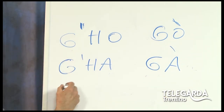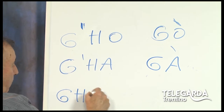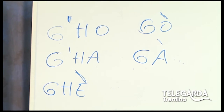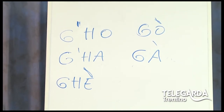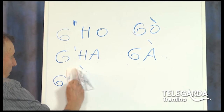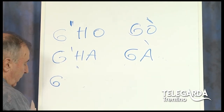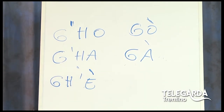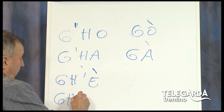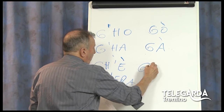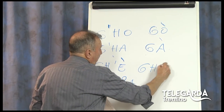Allora scriviamo GO così o GO così, o GA così. Poi c'è anche il verbo essere: GHE. Con accento fonico aperto, non GHE, perché c'è anche il GHE — GELODIT, accento chiuso. GHE voce del verbo essere, accento aperto. In questo caso rimane la GH apostrofo E, GHE. Oppure anche GHE, oppure senza l'apostrofo così.